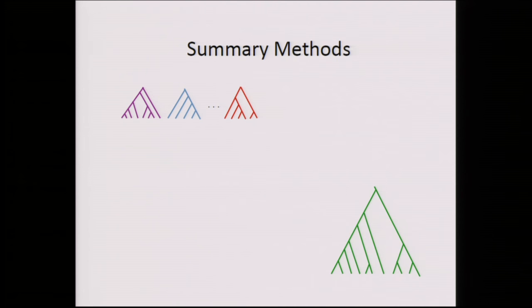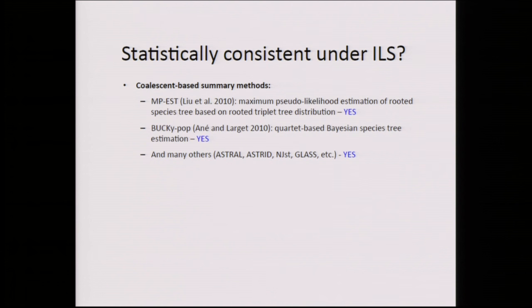We can get rooted three-leaf species trees and unrooted four-leaf species trees, so we can do algorithms using a divide-and-conquer approach. Summary methods take gene trees and try to estimate the species tree. We could look at the most frequent three-leaf gene trees or unrooted four-leaf gene trees and combine them. Coalescent-based methods that are statistically consistent will converge to the correct species tree as data goes to infinity. MP-EST works with rooted gene trees; Bucky's population tree works with unrooted gene trees — all guaranteed to be statistically consistent.